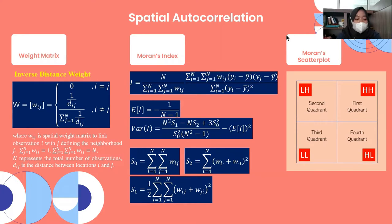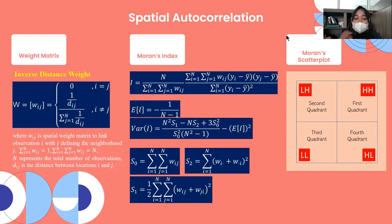The Moran scatter plot is one way to interpret Moran Index statistics. There are four quadrants: the first quadrant (top right) is called High-High (HH), indicating an area with high observation value surrounded by high observation values. The second quadrant (top left) is Low-High (LH), indicating low observation surrounded by high. The third quadrant (bottom left) is Low-Low (LL), low observation surrounded by low. The fourth quadrant (bottom right) is High-Low (HL), indicating high observation surrounded by low.